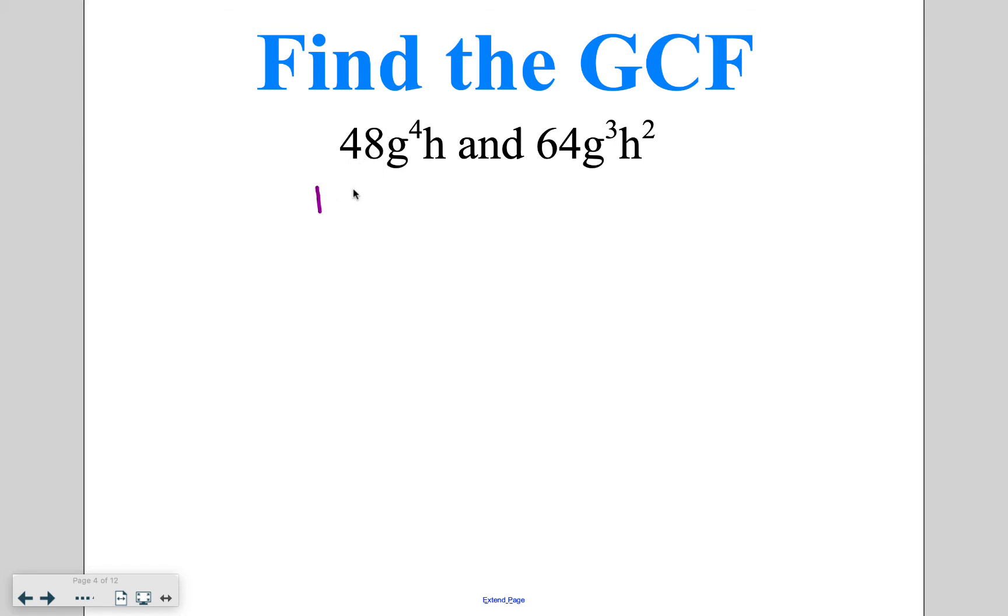For 48, we've got 1 and 48, 2 and 24 are the next factor pair, then 3 and 16, then 4 and 12, and finally 6 and 8. Then you also want to list out the variables as individual letters. So we have 4 g's because of g to the 4th and 1 singular h.